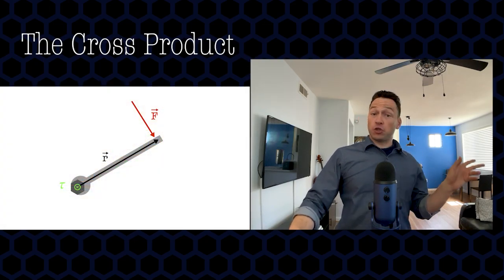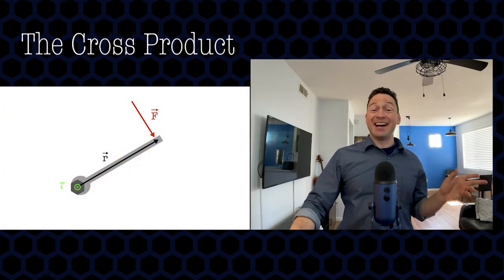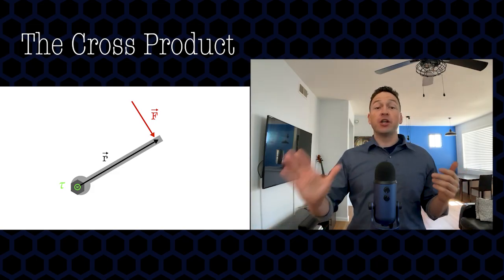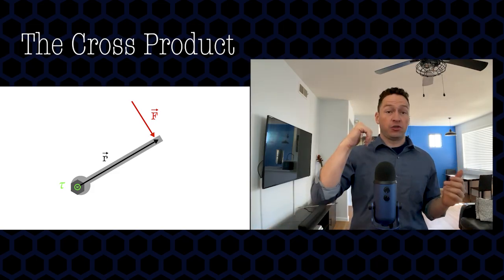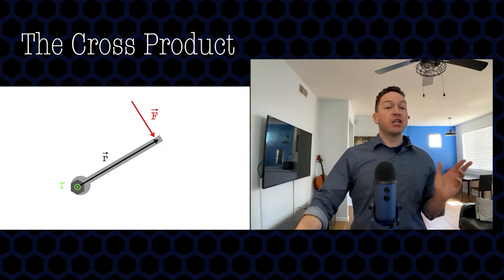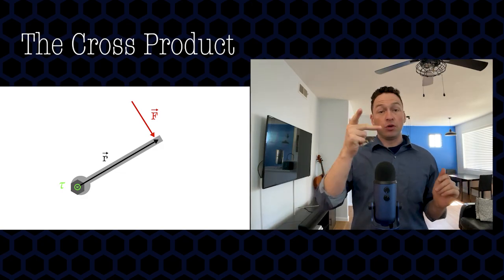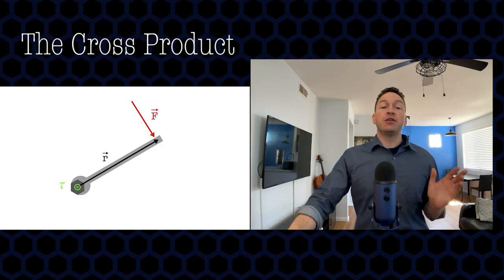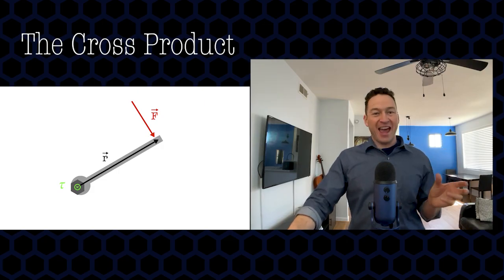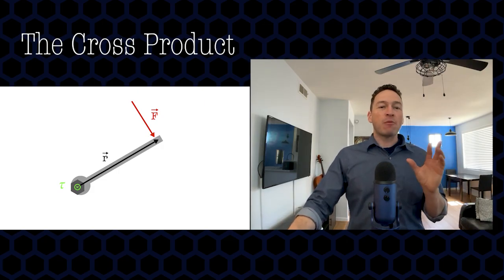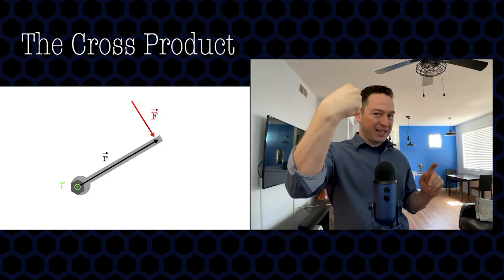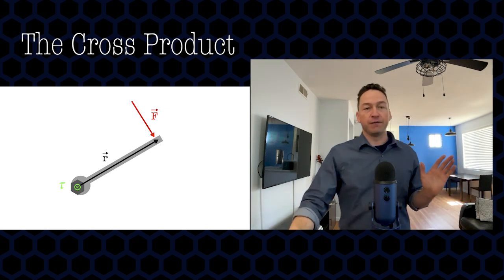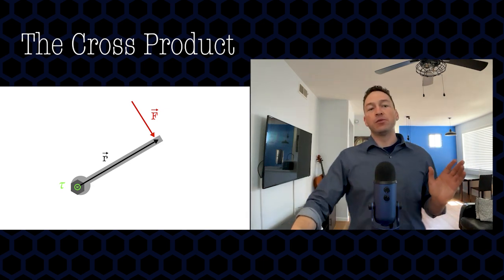In the case of this rotating nut, the force creates a torque vector which actually goes into the screen. Go ahead and confirm that with the right-hand rule. Note that the green circle with the X in it represents a vector that's pointing into the screen. You can try and give yourself a second practice session with the right-hand rule.